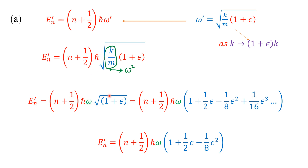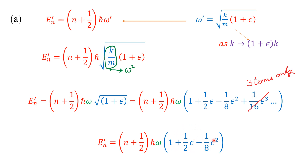Since ε is a very small perturbation, we expand √(1 + ε) as a power series: 1 + ½ε − ⅛ε² + (1/16)ε³ + ... But we need only up to second order, so we cancel terms from the ε³ term onward. We keep only the first three terms. So the perturbed energy is (N + ½)ℏω × (1 + ½ε − ⅛ε²). This is the perturbed energy up to second order in ε.